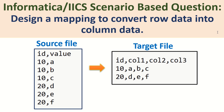Hi Techies! In this video I'm going to cover one more Informatica or IACS scenario-based question: design a mapping to convert row data into column data. If you see my screen, I have a source file with columns 'id' and 'value'. In the target file I have four columns: id, column one, column two, and column three. We have to transform the data using IACS mapping, so I'm going to design a mapping for this logic.